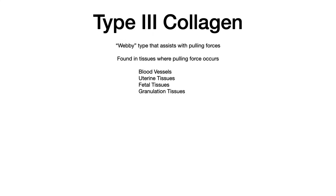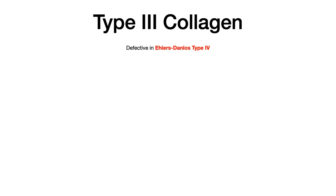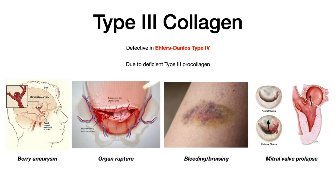For type 3 collagen, there is a disease you need to memorize: Ehlers-Danlos type 4. That's a little tricky because type 3 collagen causes Ehlers-Danlos type 4. For most exams you can get away with just memorizing Ehlers-Danlos, but if you want that 280 on USMLE, you need to know it's specifically type 4. The problem is deficient type 3 pro-collagen, so type 3 collagen never fully forms. The constellation of symptoms includes a berry or saccular aneurysm in the cerebral vasculature, organ rupture, bleeding and bruising, and a very unique feature — mitral valve prolapse.